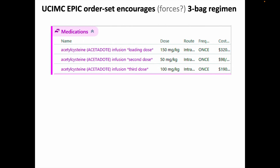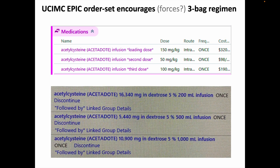Here are some partial screenshots from EPIC, the electronic medical record system used at UCI Medical Center in Orange. The EPIC order set encourages — or one might even say forces — you to use the three-bag regimen. All you need to do is insert the patient's weight, and this system also automatically includes the amount of IV fluid into which the NAC gets diluted. It's a pretty good idea to have a system that makes it hard to order the NAC incorrectly.